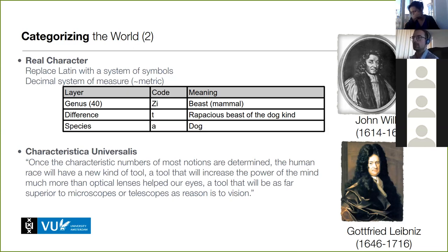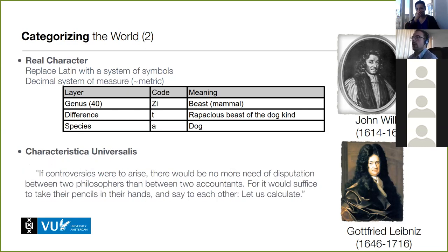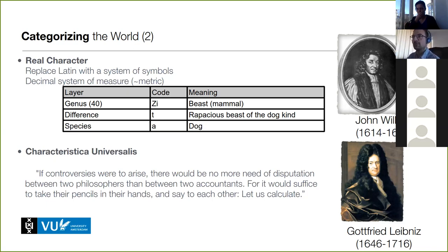Leibniz's characteristica universalis was the idea that we humans would have a new kind of tool — more important than microscopes or telescopes. It would be this formal language to describe ideas and the operations allowed between these ideas to produce new ideas, so that the entire process of thought would be just a calculation.